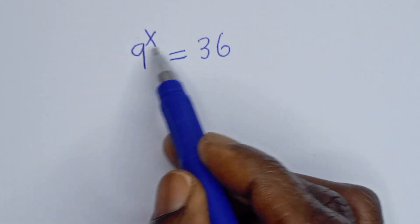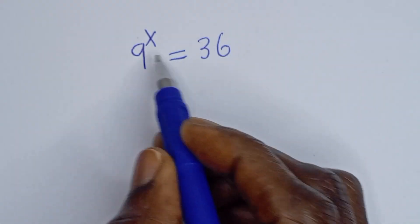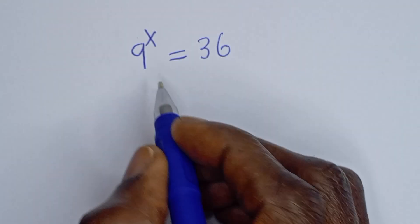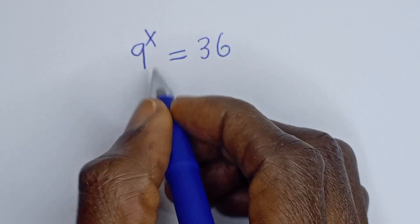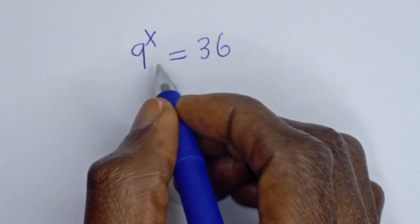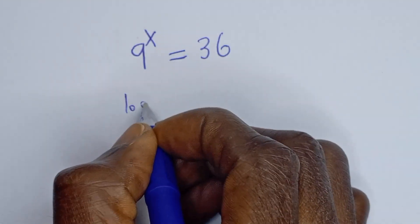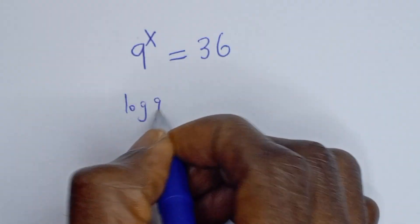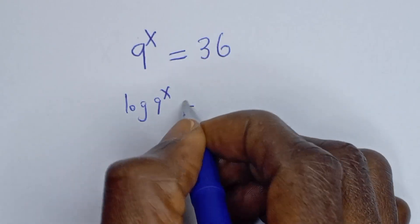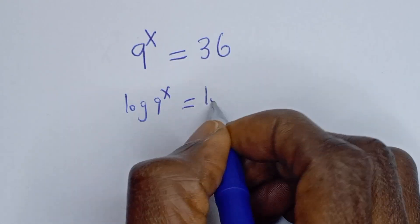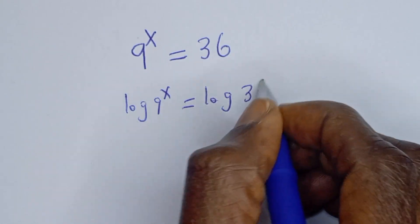Hello. How to solve for s from this given equation: 9 to the power of s is equal to 36. Let's take the log of both sides. We have log 9 to the power of s is equal to log 36.